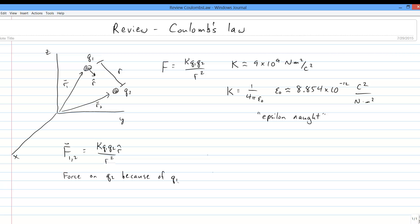This is the force on charge 2 because of charge 1. This little guy, which we call r-hat, is a unit vector that points from the thing making the force to the thing feeling the force, from the source to the observation point.